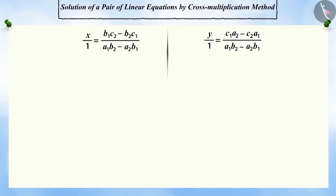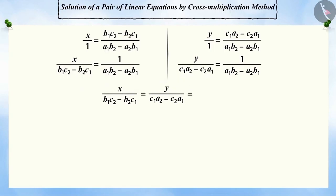If you analyze the values of x and y, we get x divided by b1 c2 minus b2 c1 equals y divided by c1 a2 minus c2 a1, which equals 1 divided by a1 b2 minus a2 b1.